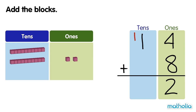Now we can add the tens. 1 ten plus 1 ten equals 2 tens. There are 22 blocks altogether. 14 plus 8 equals 22.